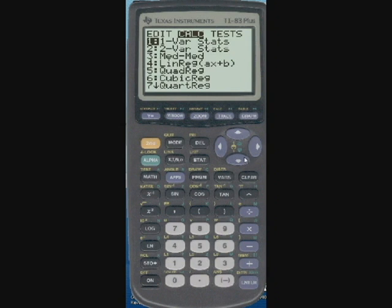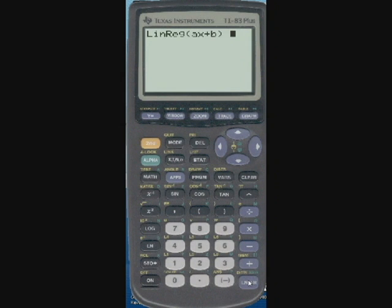You go to stat, calc, linear regression, and now it's only going to show you MX plus B. It won't show you R.